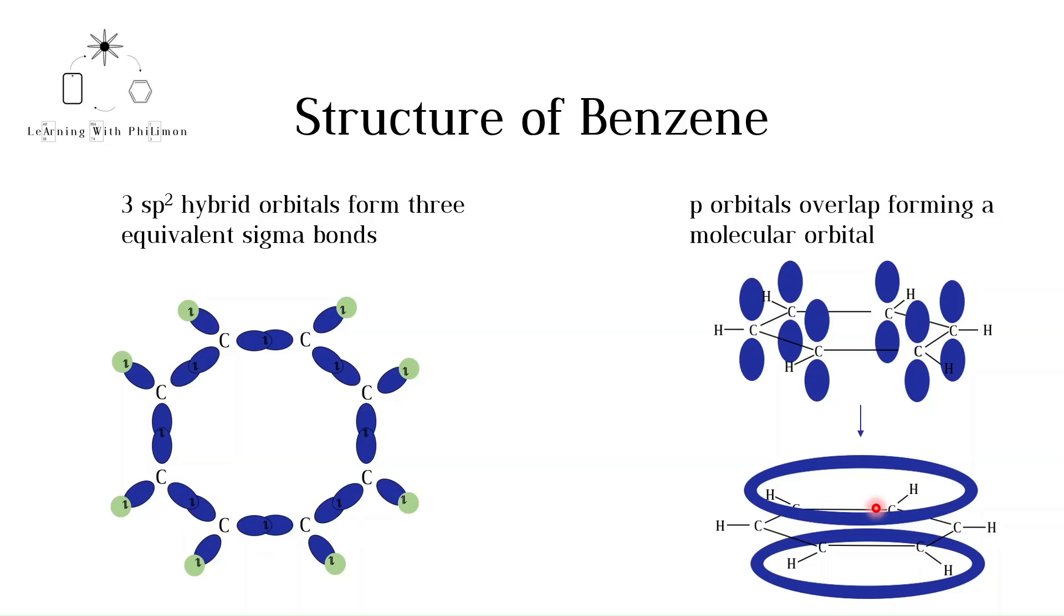Benzene is often drawn as a six-membered ring with a ring in the middle, which represents the delocalized electrons in the molecular orbital. Although this is the accepted structure of benzene, you will see both this one and the Kekulé structure used. Thank you for listening. To consolidate your learning, try answering the questions in the description. If you haven't already, please subscribe for more content. Stay curious.